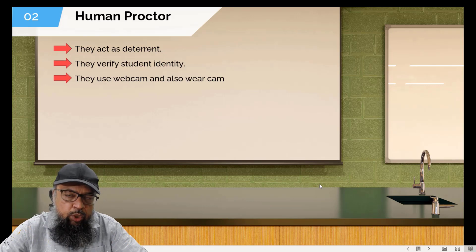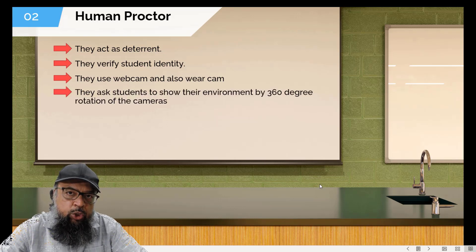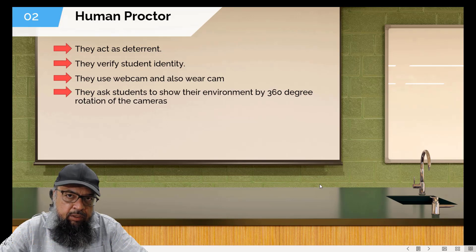Sometimes they ask students to wear a camera on their glasses, which is called a wear cam, or they can ask students to hang a camera behind them on the wall. Then they also ask students to move their webcam in a 360 degree rotation, and they check the environment of the student and try to find anything camouflaged or hidden there, for example, a book or a phone. And in this way, they scan the environment of the student.